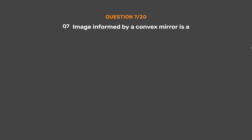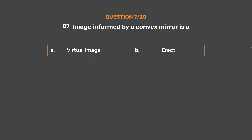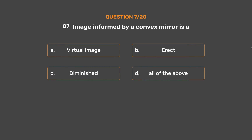Question number 7. Image formed by a convex mirror is: option A, virtual image; option B, erect; option C, diminished; option D, all of the above. The correct answer is option D, all of the above.